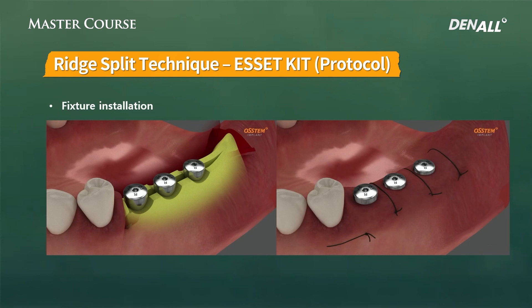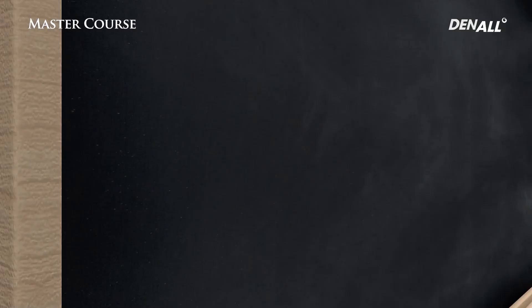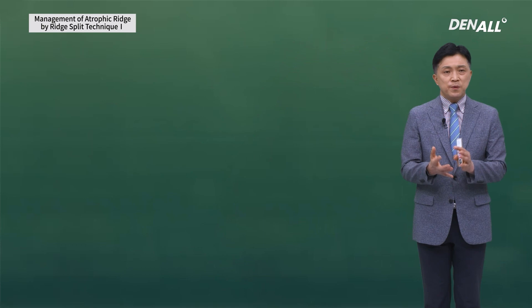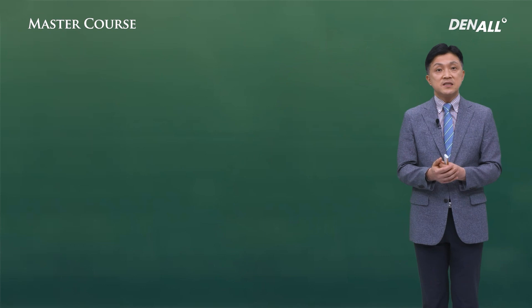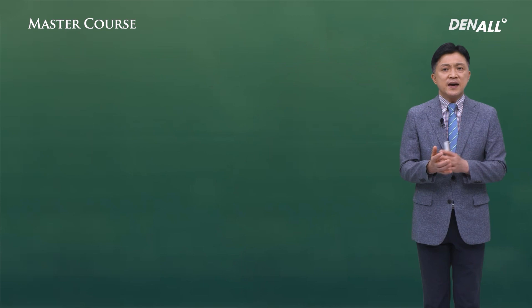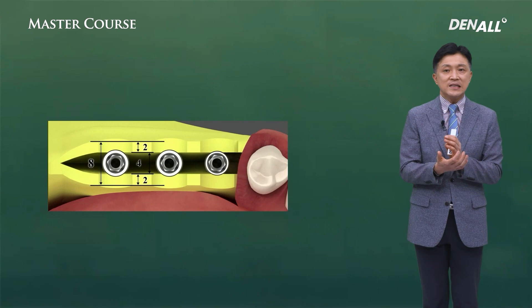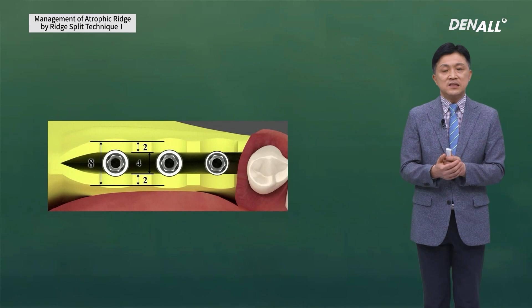If you use this protocol with the asset kit, that is really all there is to it. The asset kit is used when there is an atrophied alveolar ridge with horizontal resorption. It is a kit designed for ridge split. Using the asset kit makes ridge split simpler and easier, but it is essential to fully understand the protocol.